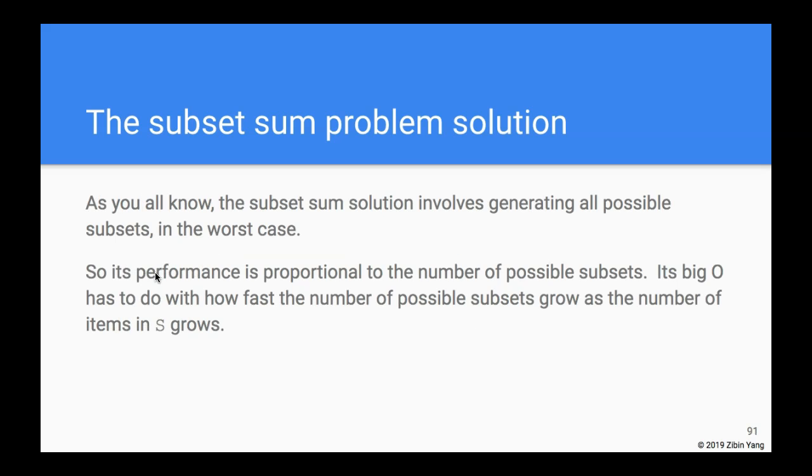And if you remember the solution, the solution basically involves generating all the possible subsets in the worst case, and that is what we're concerned about. So the performance of the solution is proportional to the number of possible subsets. In other words, the subset sum algorithm, the Big O really has to do with how fast the number of possible subsets grow as the number of items in S grows.